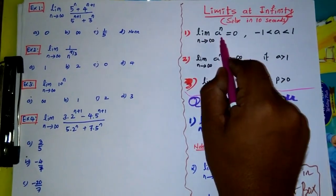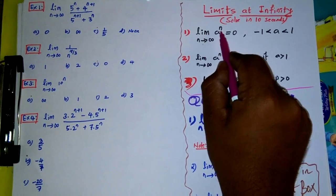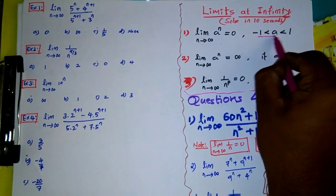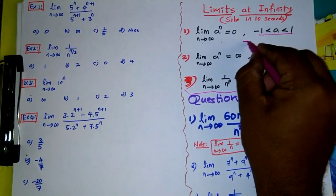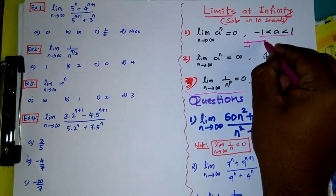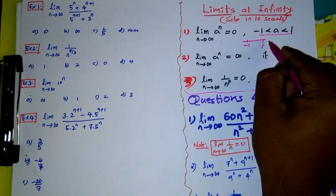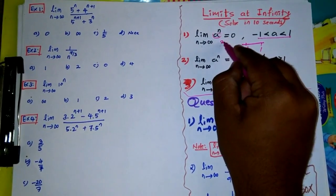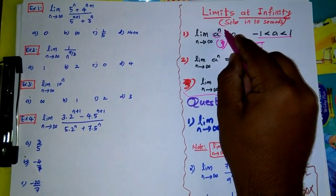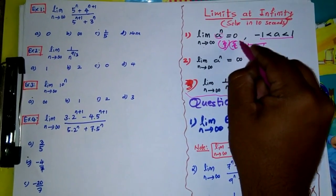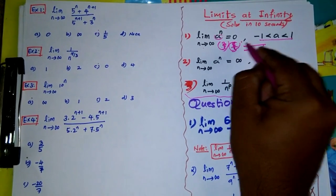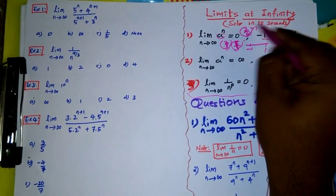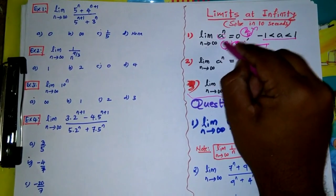This is the first important result: limit n tends to infinity of a raised to n equals zero, where a is between minus one and one. For example, limit n tends to infinity of (2/3)^n is 0. Similarly, (2/5)^n is also 0. So limit n tends to infinity of a^n equals zero when |a| < 1.